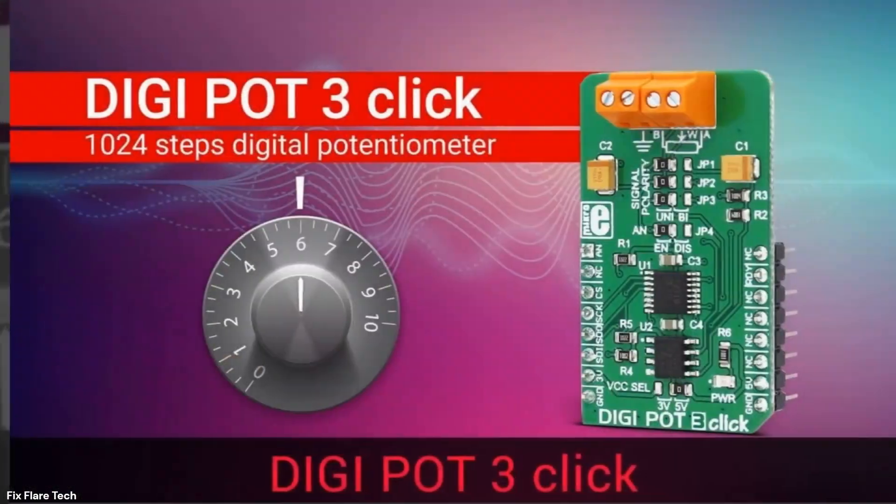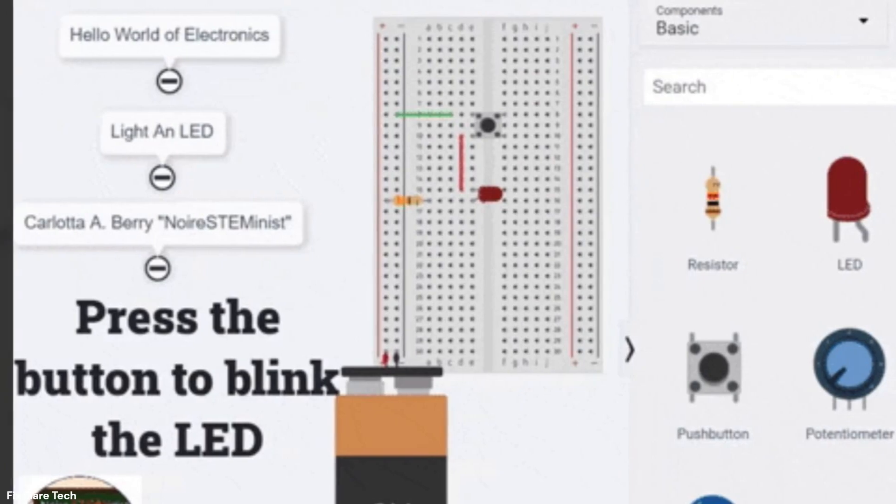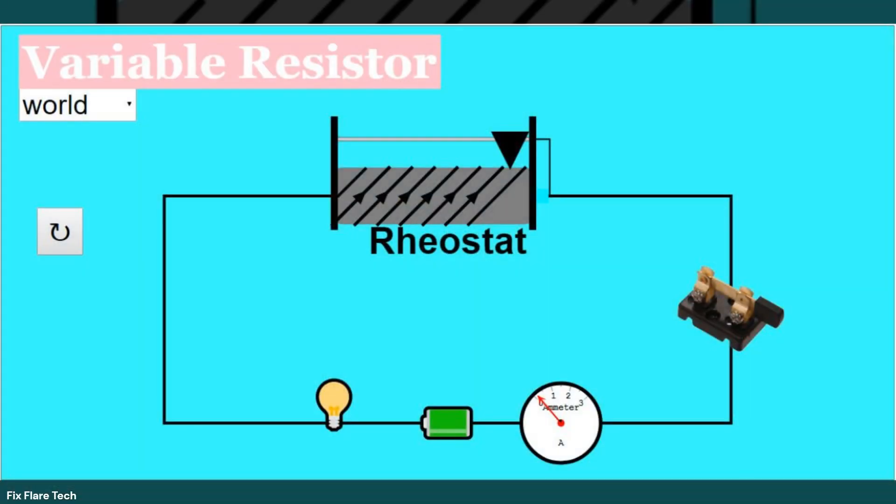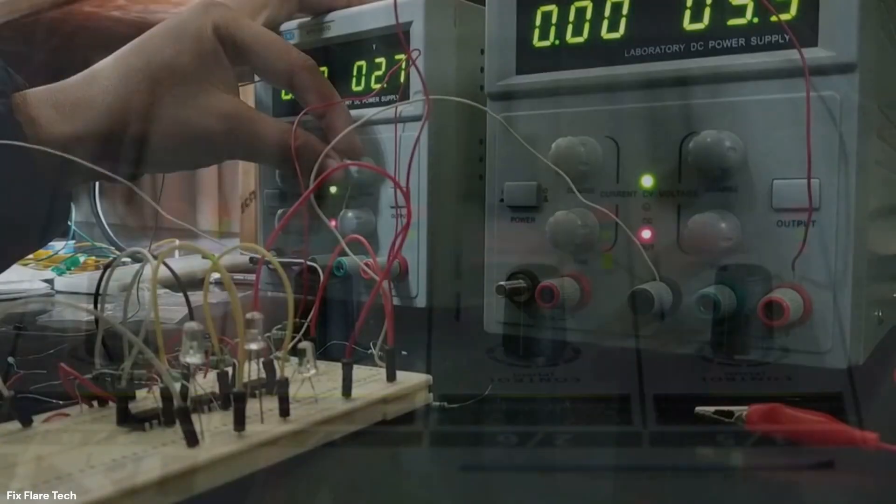A digital potentiometer, often called a digipot, is a key player in the world of electronics. It's essentially a variable resistor that allows you to control voltage in a circuit, just like a knob that you can turn up or down. But instead of manually twisting a knob, it's adjusted digitally.